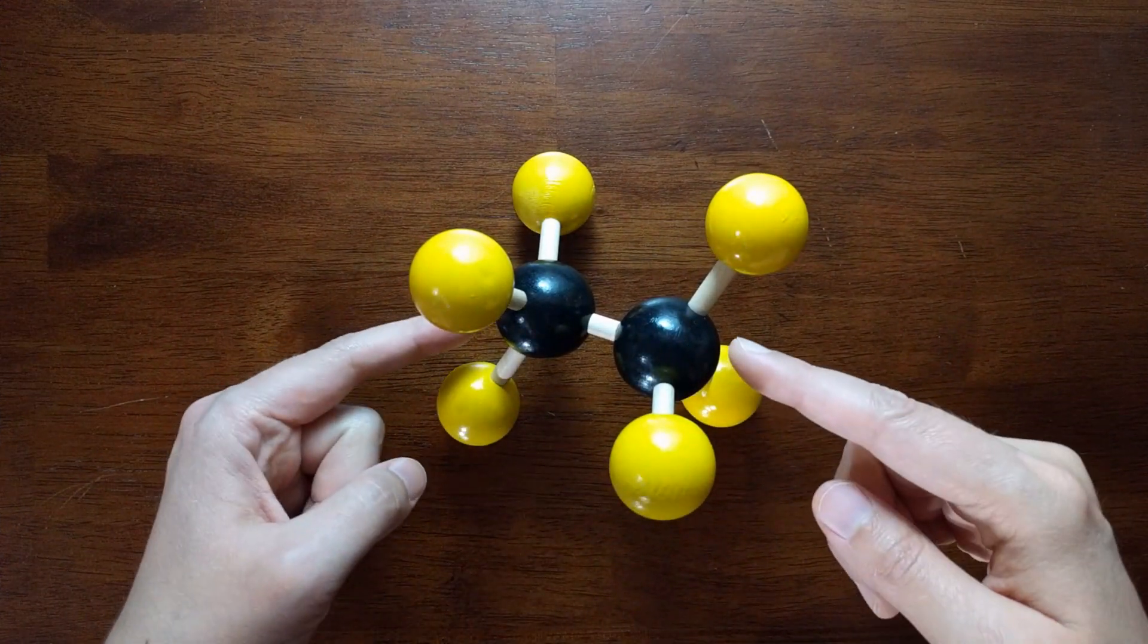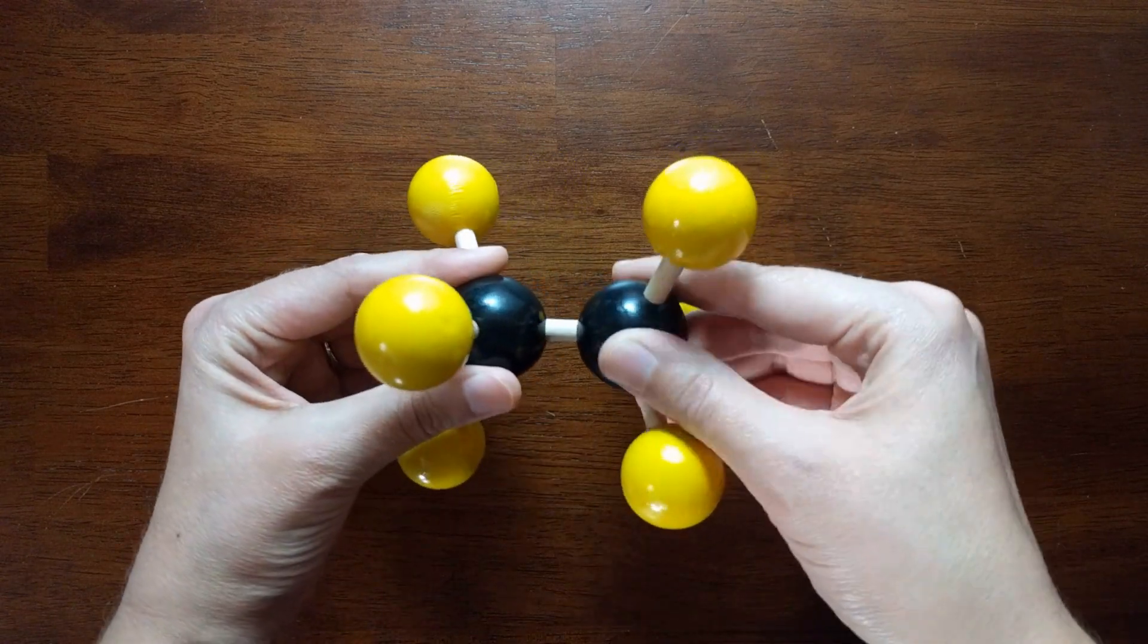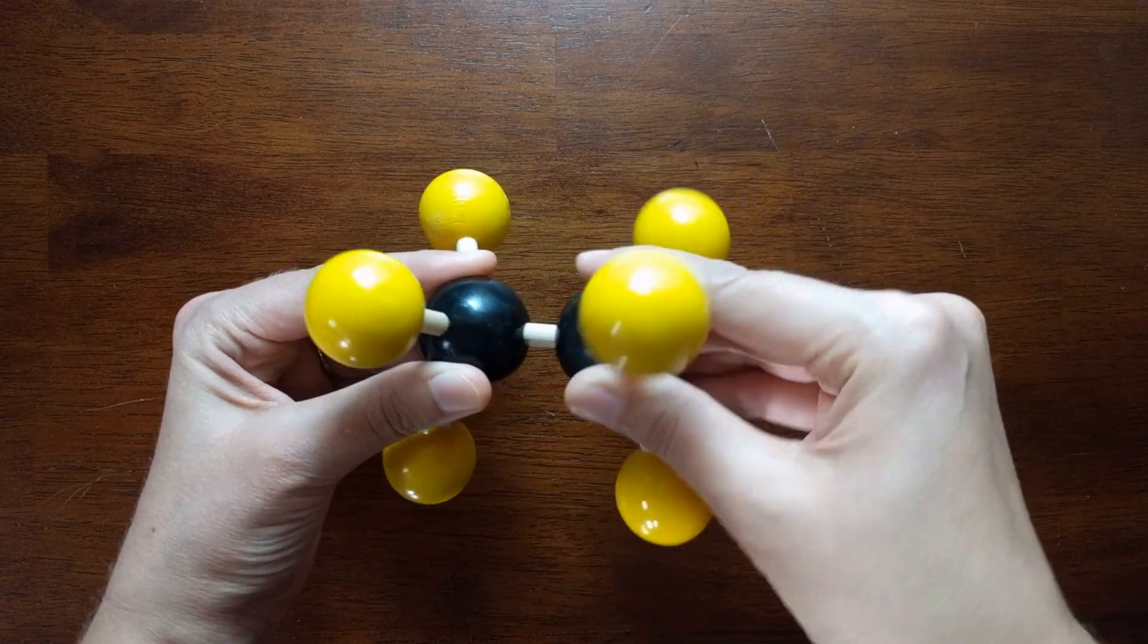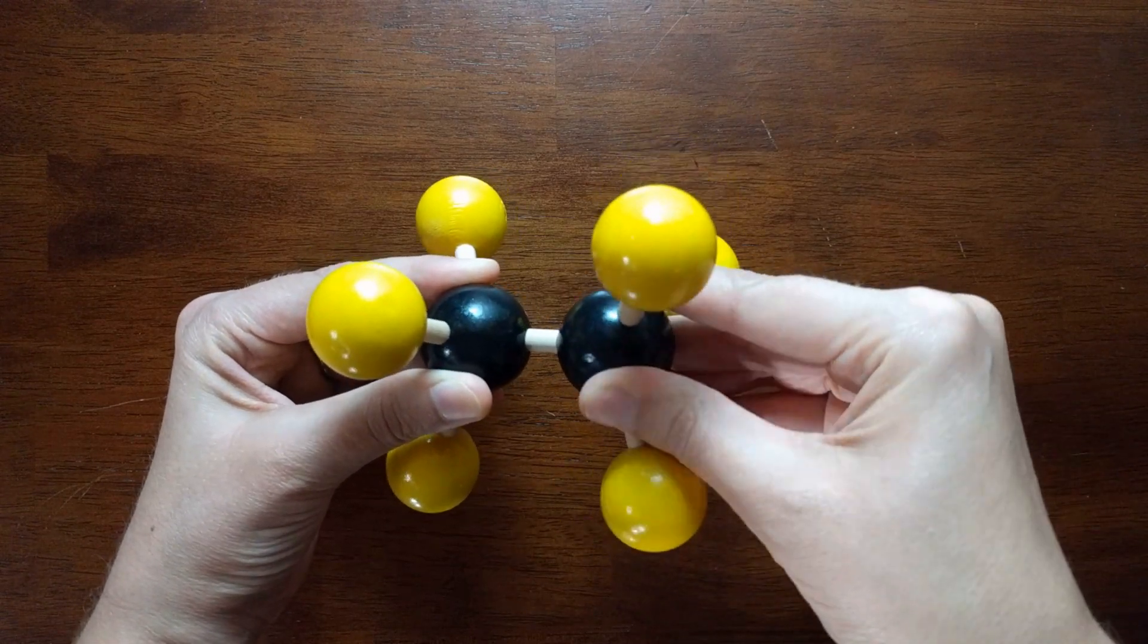We have two black carbons and six yellow hydrogens. Now single bonds can rotate, so there are a lot of different possible arrangements of this molecule. These arrangements are called conformations.